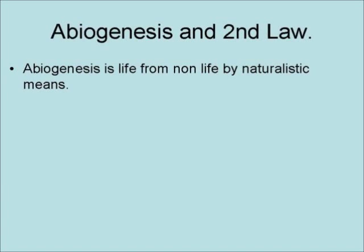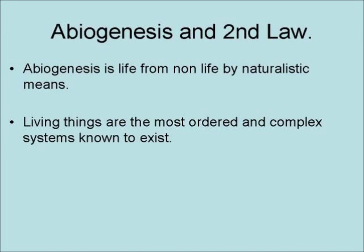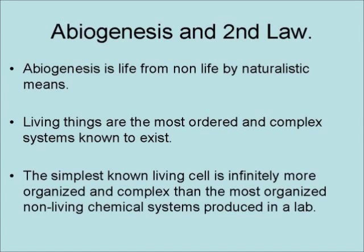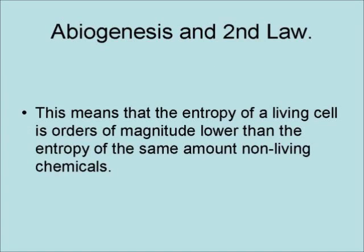Abiogenesis is life from non-life by naturalistic means. Living things are the most ordered and complex systems known to exist. The simplest known living cell is infinitely more organized and complex than the most organized non-living chemical systems produced in a lab. This means that the entropy of a living cell is orders of magnitude lower than the entropy of the same amount of non-living chemicals.